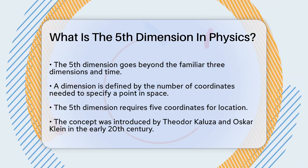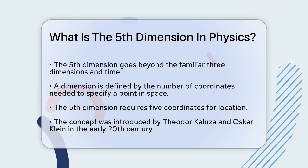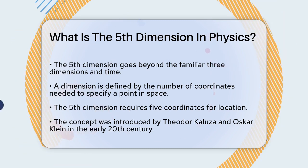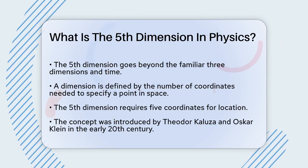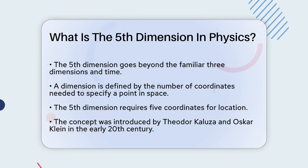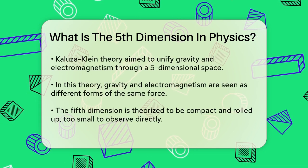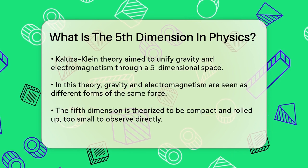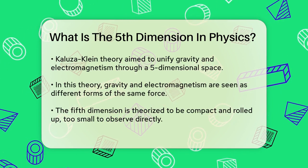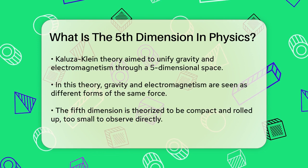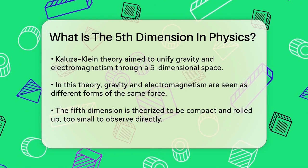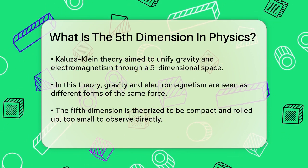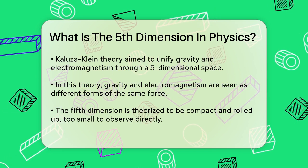The idea of a fifth dimension was first introduced by Theodor Kaluza, a German mathematician, and Oskar Klein, a Swedish physicist, in the early 20th century. They developed the Kaluza-Klein theory, which aimed to unify two of the fundamental forces of nature—gravity and electromagnetism. This theory proposed that these forces could be united if we consider a five-dimensional space. Imagine a world where gravity and electromagnetism are not separate forces, but different manifestations of the same underlying force.